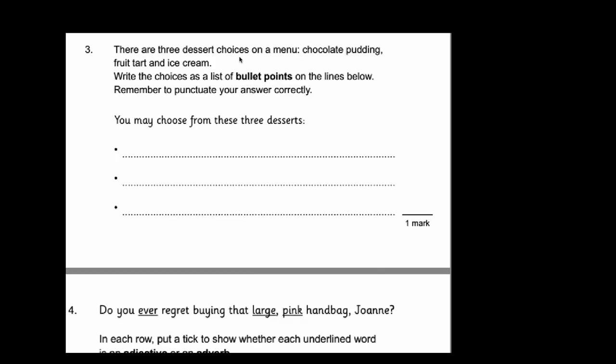Number 3. There are three dessert choices on a menu: chocolate pudding, fruit tart and ice cream. Write the choices as a list of bullet points on the lines below. Remember to punctuate your answer correctly. In this we need to remember two very important things. When we're writing bullet points you do not need full stops. So make sure you don't include those. Another thing you do need is capital letters. So you need to make sure you've put the capital letters so that's how you would record your answer.